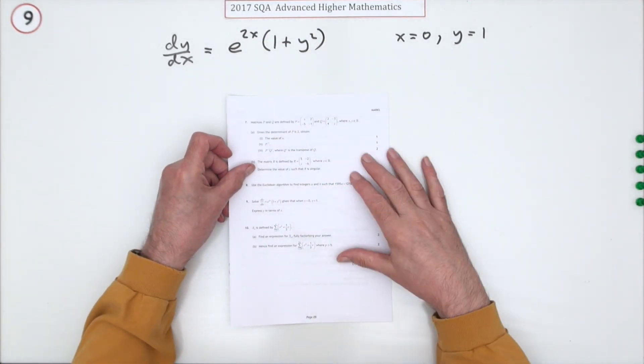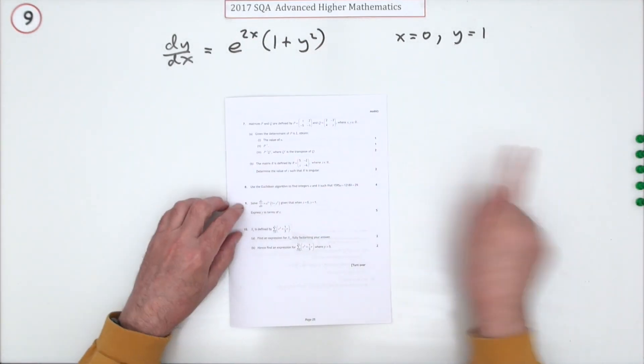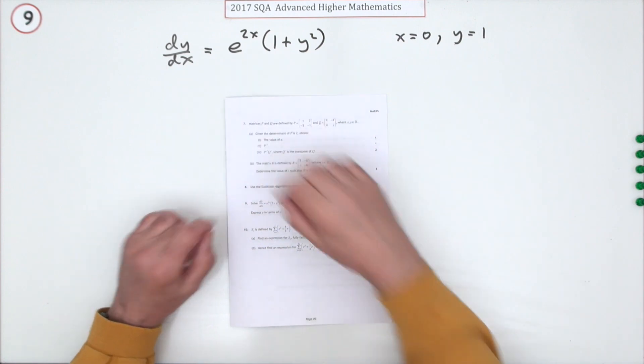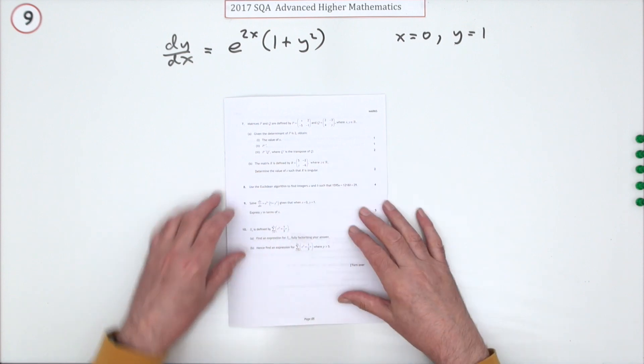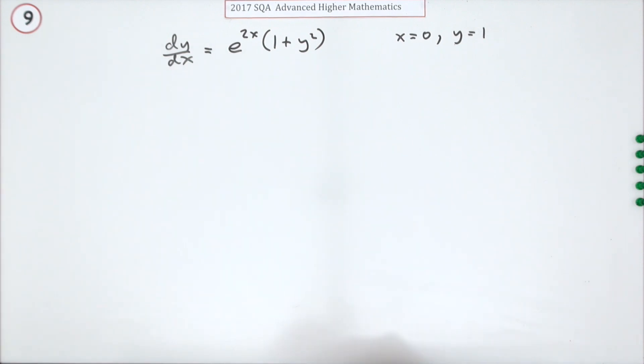Number 9 then from the 2017 Advanced Higher Maths. Here we go. For 5 marks, solve this differential equation given these initial conditions. Express y in terms of x as you would.